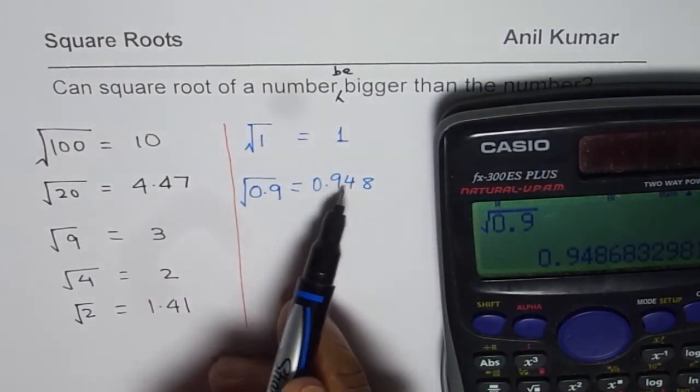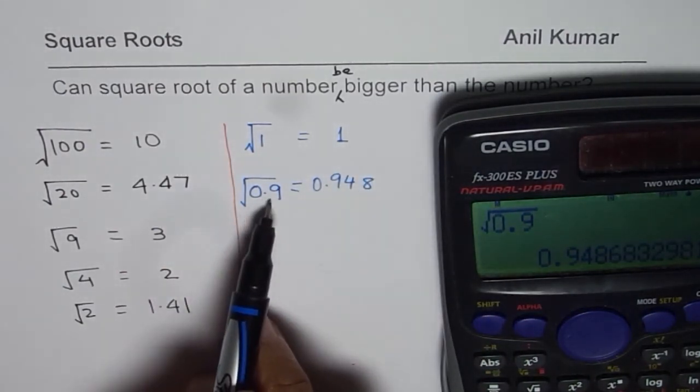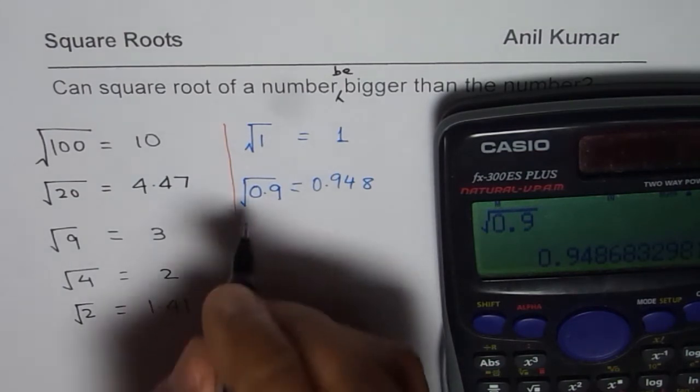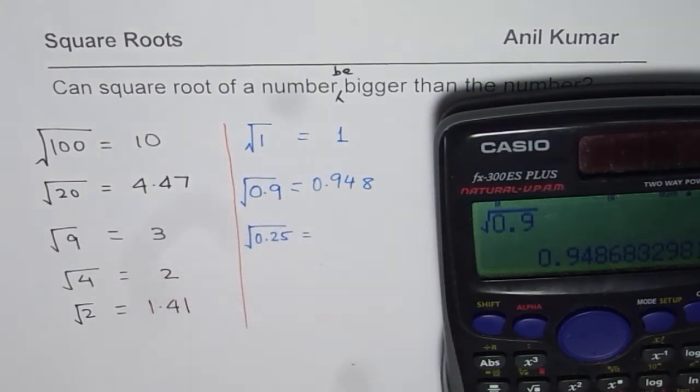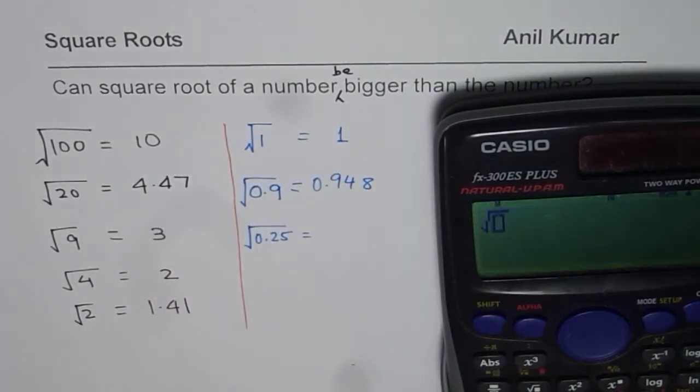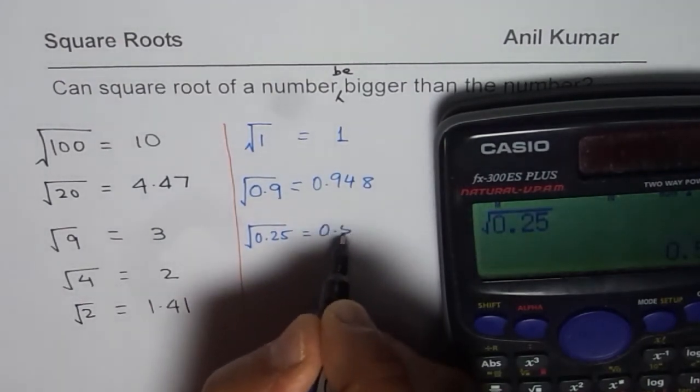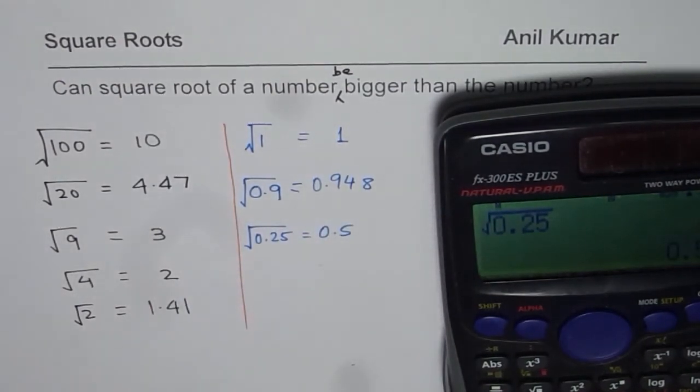Clearly, 0.948 is greater than 0.9, right? How about square root of 0.25? Let's do it. Square root of 0.25 equals to, in decimal numbers, 0.5, it is almost 2 times. Do you see that?